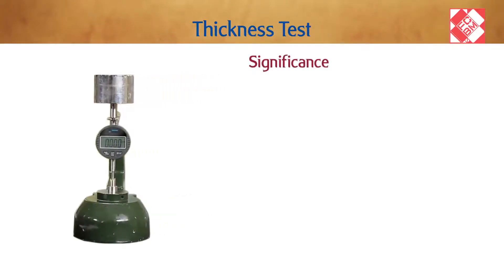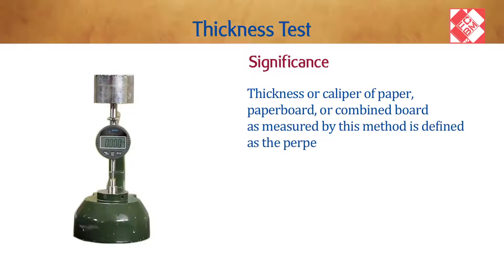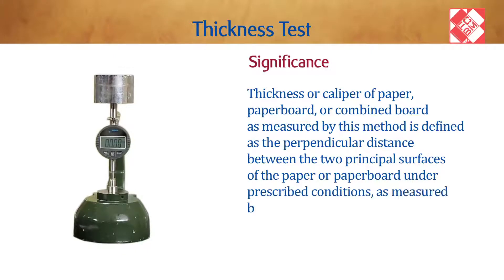Significance: Thickness or caliper of paper, paperboard, or combined board as measured by this method is defined as the perpendicular distance between the two principal surfaces of the paper or paperboard, under prescribed conditions as measured between hard metal platens.